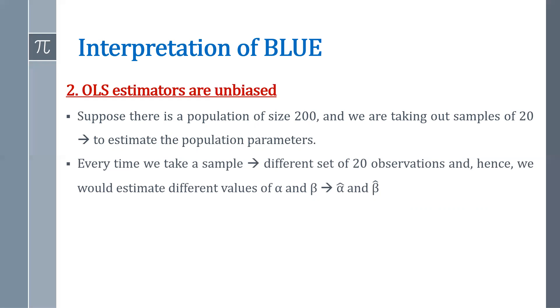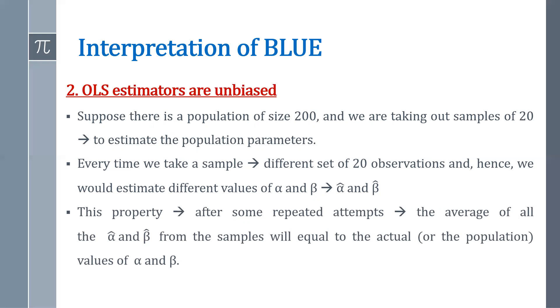Now, every time we take a sample, different set of twenty observations, and hence we would estimate different values of alpha and beta through alpha hat and beta hat because we are taking samples repeatedly and therefore the values of alpha hat and beta hat are different. So this property says that after some repeated attempts, the average of all the alpha hat and beta hat from the samples will equal to the actual values of alpha and beta. So mathematically, we can say that expected value of alpha hat is equal to alpha and expected value of beta hat is equal to beta. So that is the idea of unbiasedness property of OLS estimator.